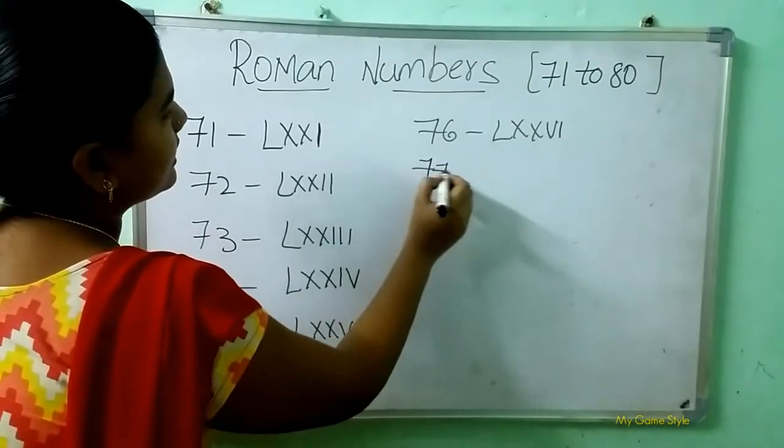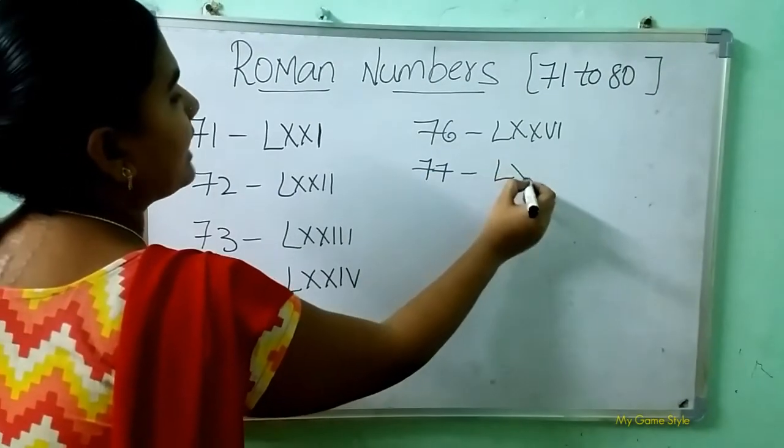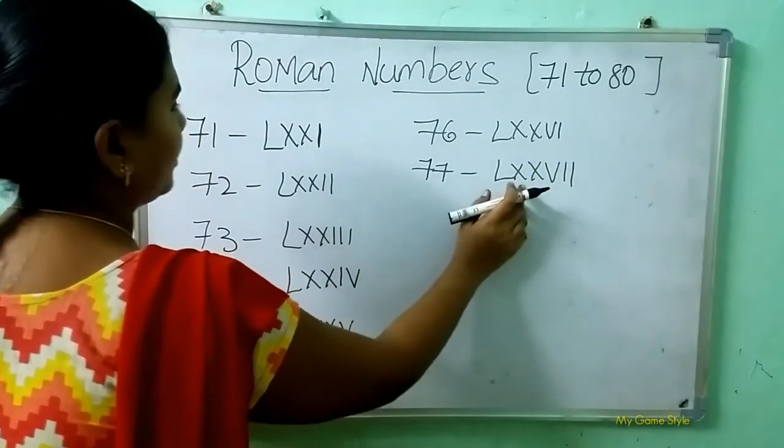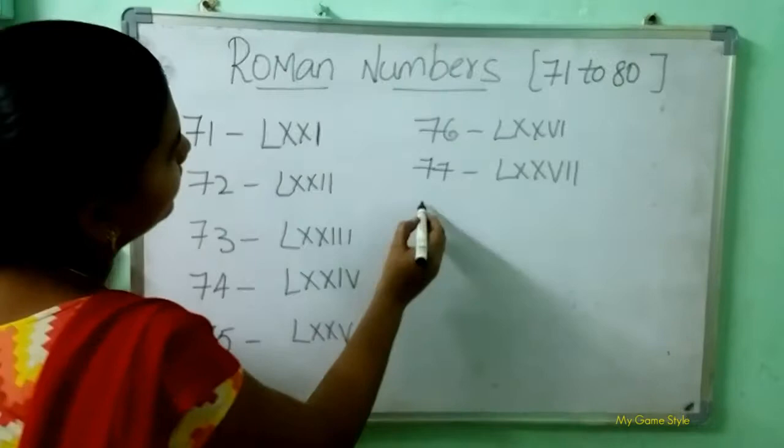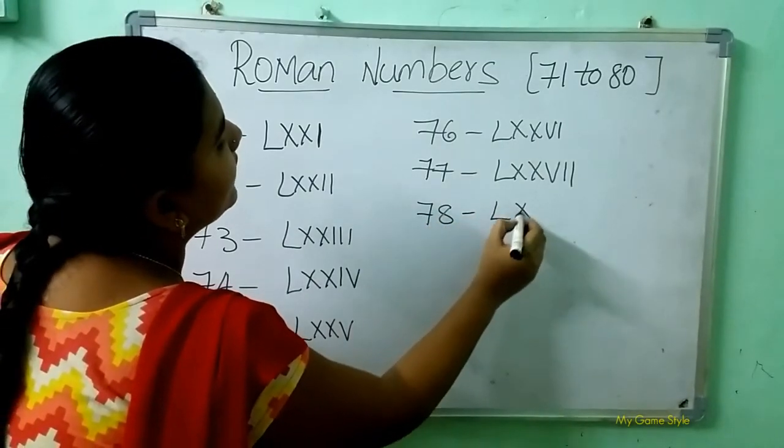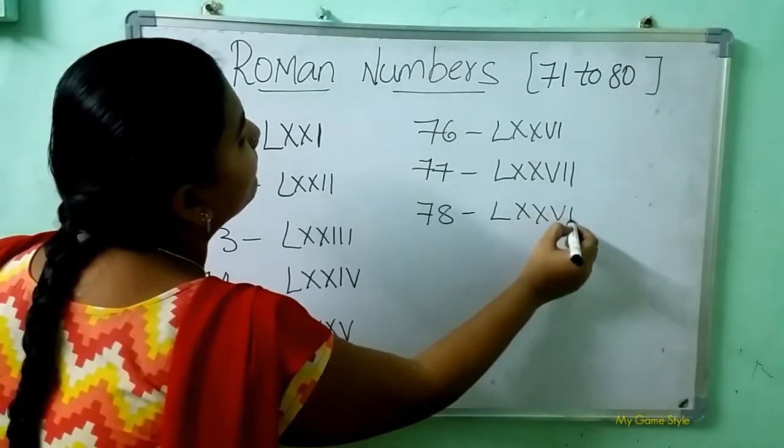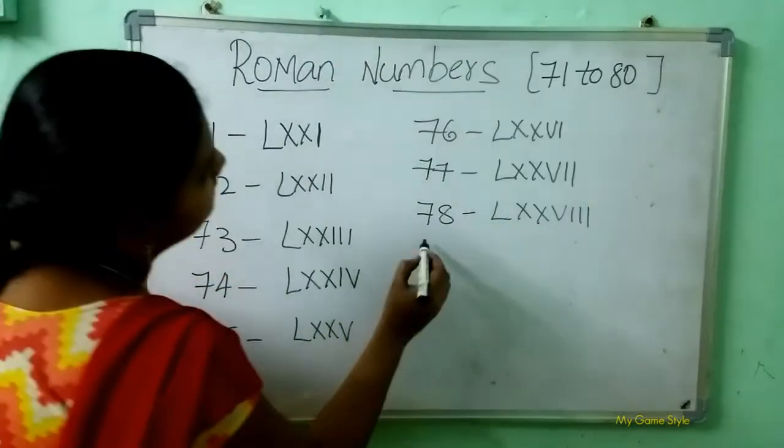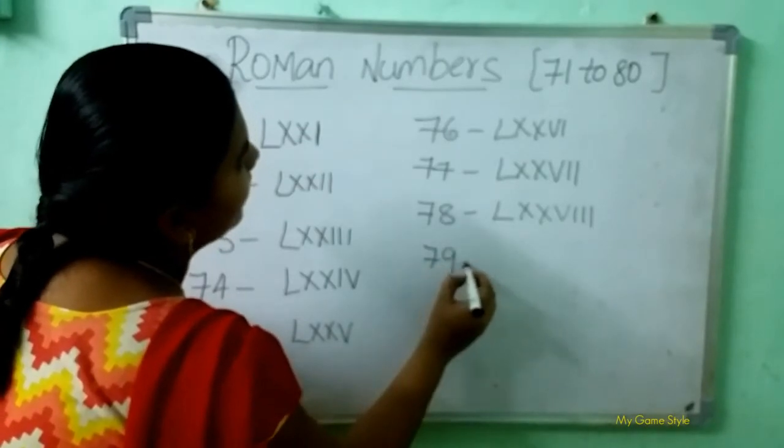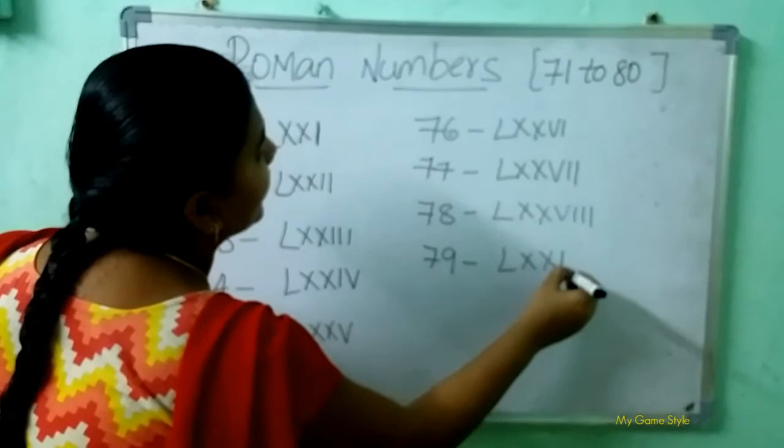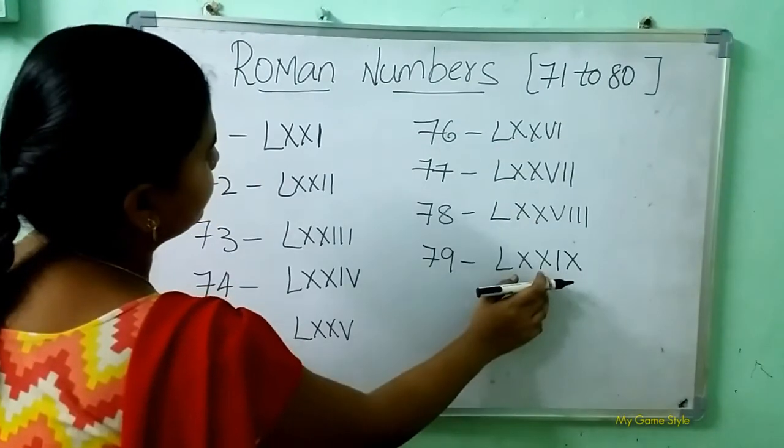78: L, double X, V, triple I. This is 78. 79: L, double X, I, X. This is 79.